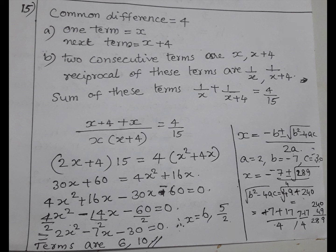x plus 4 plus x divided by x into x plus 4. 30x plus 60 equals 4x squared plus 16x. Terms x equals 6, 5 by 2. Terms are 6, one term x equals 6. Next term is x plus 4, 6 plus 4 equals 10.